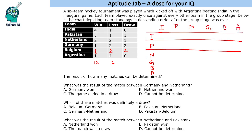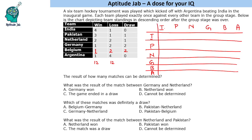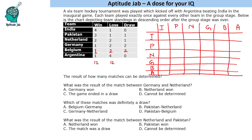We only need the lower triangle of the table — one-way results. So we cancel the upper half, since finding Netherland versus Pakistan covers that match. We'll determine who is the winner against which team.